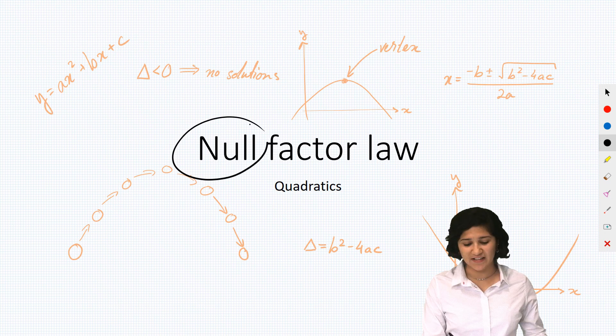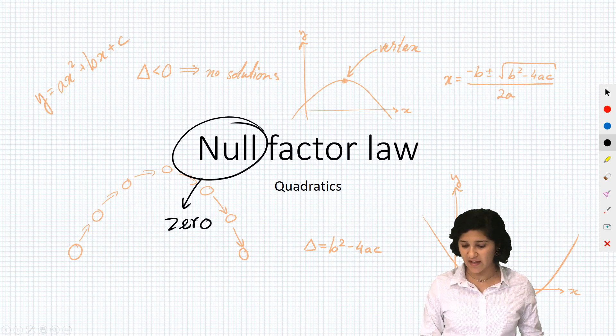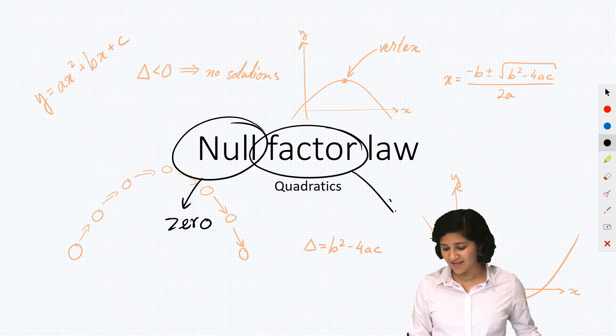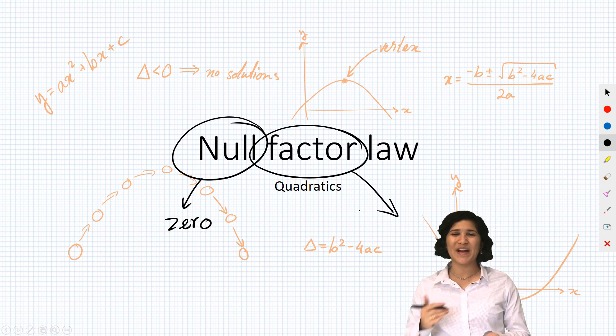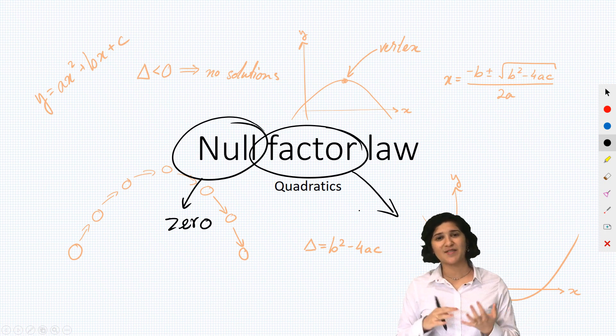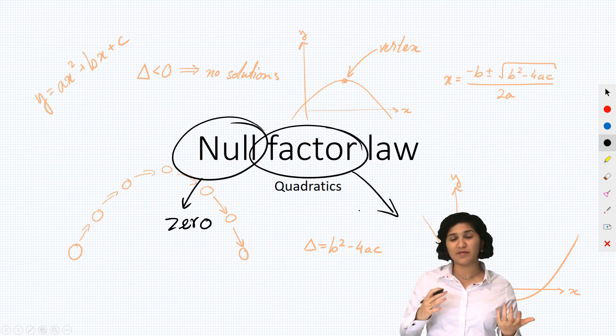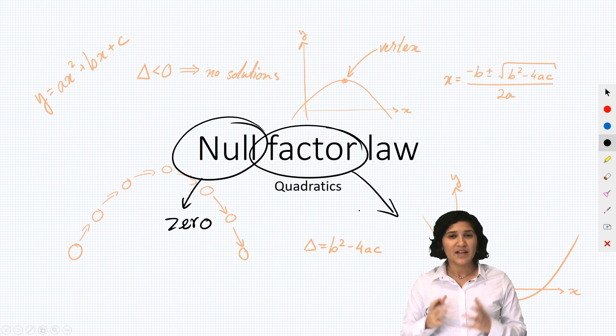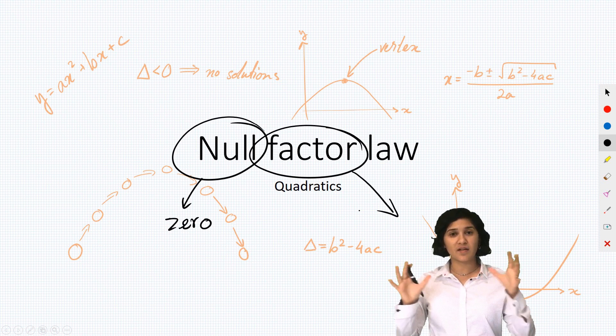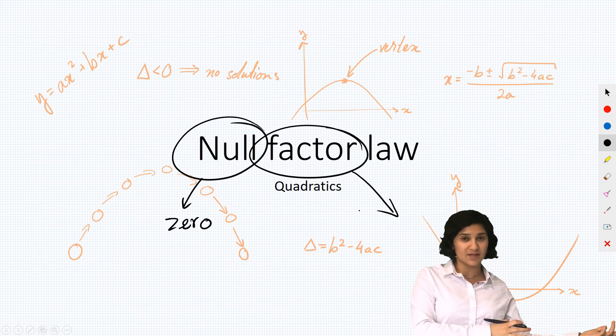The null factor law sounds kind of fancy and complicated but it's really not that bad. Null just means zero—null like nothing, so zero. And factor is just factors, so if you think of factors of 10, it's like 2 and 5 or 1 and 10. Factors are just things that multiply to give something else.